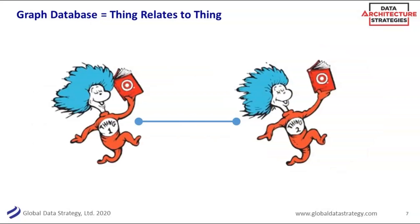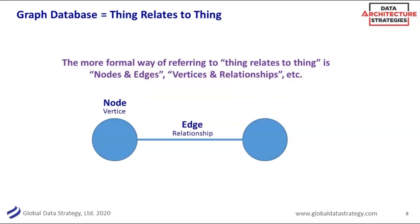The formal way to say 'thing relates to thing' is the idea of nodes and edges, or vertices. Every tool or modeling technique uses slightly different words, but just the idea of — you should be familiar with this if you're familiar with databases — you've got the thing and you've got the relationship. One of the differences in graph is that those relationships are really first-order constructs, and the way you can look at data with different lenses. As Tom mentioned, you have different ontologies — different views on that data or different ways you want to look at it.